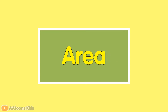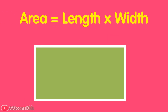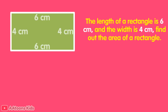Now we will learn how to find the area of a rectangle. The area of a rectangle equals length multiplied by width. Let's understand this by an example: the length of a rectangle is 6 cm and the width is 4 cm. Find the area of the rectangle.